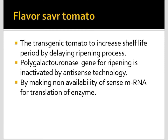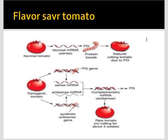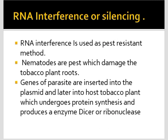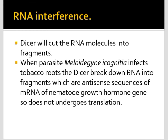Flavr Savr tomato is a transgenic tomato developed to increase shelf life by delaying the ripening process. Ripening takes place in the presence of the polygalacturonase enzyme. Using antisense technology, this enzyme is inactivated by making the sense mRNA unavailable for translation. If this enzyme is inactivated, the ripening process does not take place because sense mRNA is absent and translation does not occur. The polygalacturonase enzyme normally softens the fruit by breaking bonds in cellulose. Inactivating it increases shelf life. This is a commercially important product.